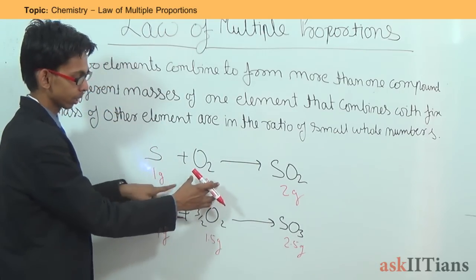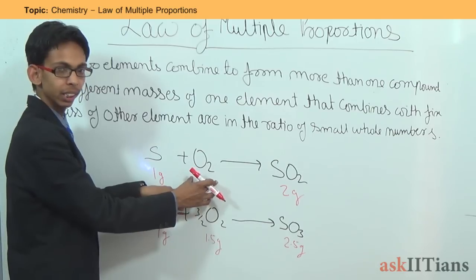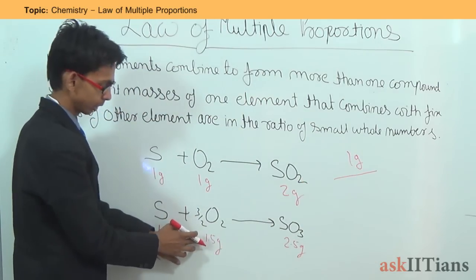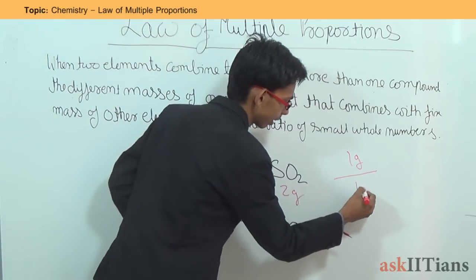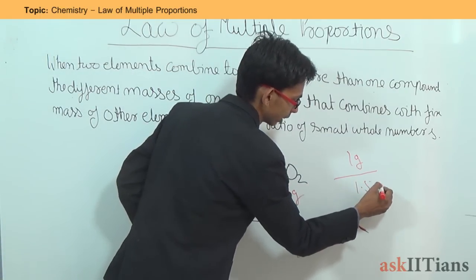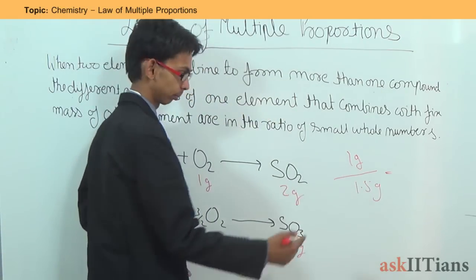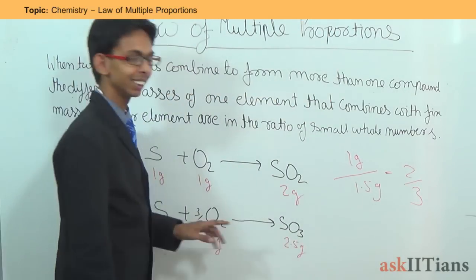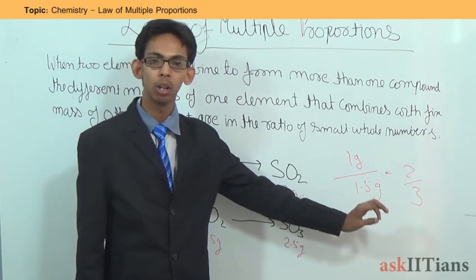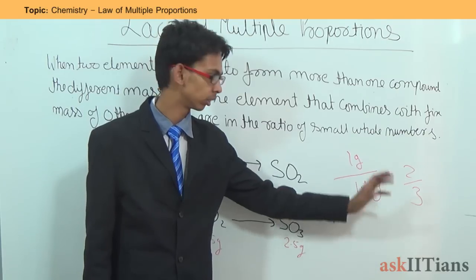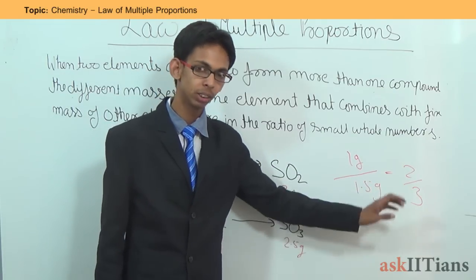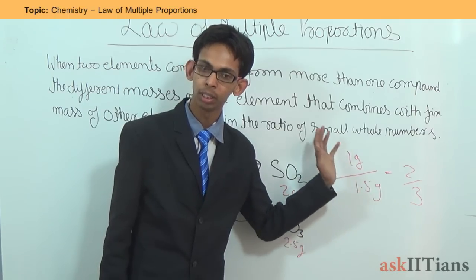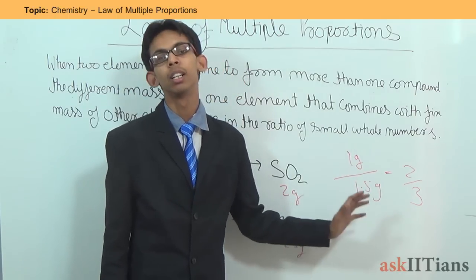Let's check the ratio. The mass of oxygen in the first reaction is 1 gram and in the second reaction it is 1.5 grams. So the ratio is 1 to 1.5, which simplifies to 2 to 3. Both 2 and 3 are whole numbers, so this is a ratio of small whole numbers — confirming the law of multiple proportions.